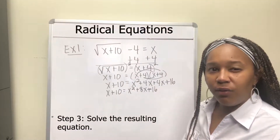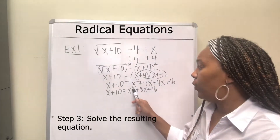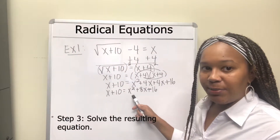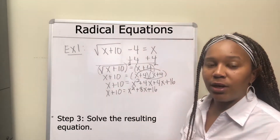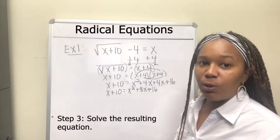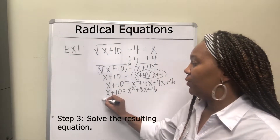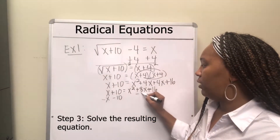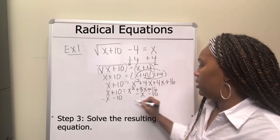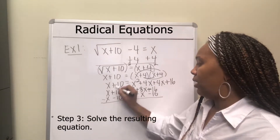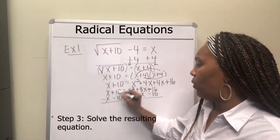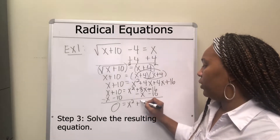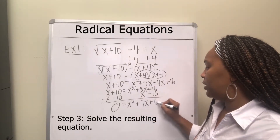Now what kind of equation are you left with? You're left with a quadratic equation — the highest exponent is 2. Whenever you have a quadratic equation, you want to get 0 on one side. So I need to move the x and the 10 to the other side, leaving me with 0.